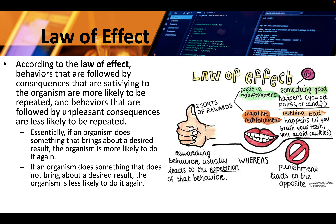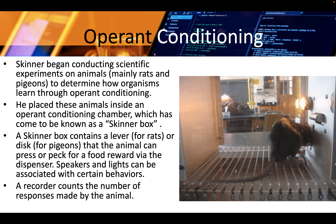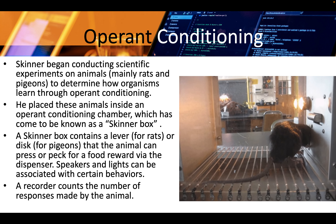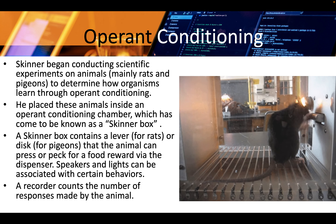Essentially, if an organism does something that brings about a desired result, the organism is more likely to do it again. If an organism does something that does not bring about a desired result, the organism is less likely to do it again. Skinner began conditioning scientific experiments on animals, mainly rats and pigeons, to determine how organisms learn through operant conditioning. He placed these animals inside an operant conditioning chamber, which has come to be known as a Skinner box.